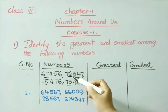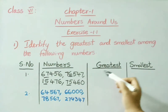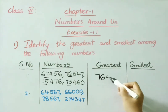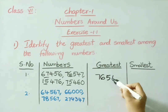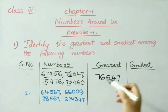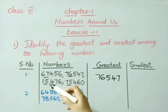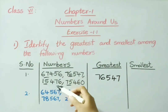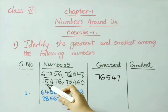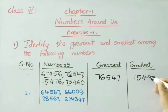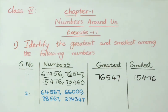Here, 76,000 value is greatest. So, write down the answer 76,547. And the least one — see here 75,000; 67,000; 15,000 — among all the 3, which is least? 15,000 value. So, write down the smallest value: 15,476.